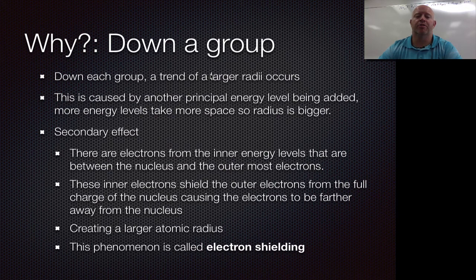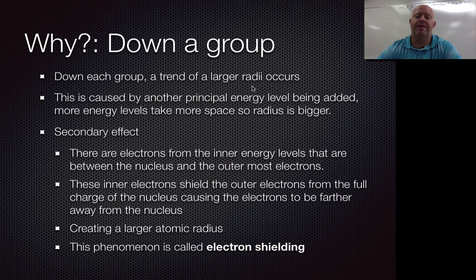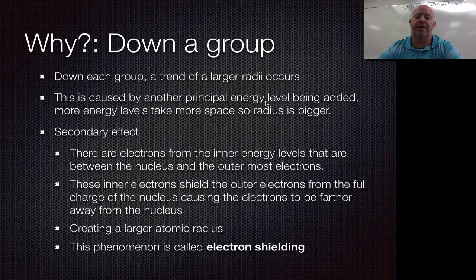As you go down a group, you might think the same effect would happen — more protons, more electrons, so shouldn't it get smaller too? However, the big difference is that as you go down a group, you're going down energy levels, putting electrons further and further away on higher energy levels. Because you're adding more principal energy levels, those outer electrons are physically further from the nucleus. As a result, the atom actually gets bigger.